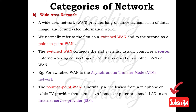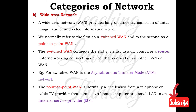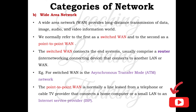The next category is the Wide Area Network. A WAN provides long-distance transmission of data, images, audio, and video. There are two types of WAN: the switched WAN and the point-to-point WAN. The switched WAN connects end systems and usually comprises a router as the networking connection device that connects other LANs or WANs.